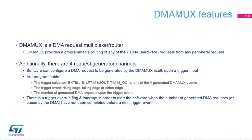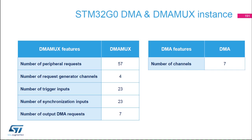The DMA-MUX may also be used as a DMA request generator from programmable events on its input trigger signals. It is used to map peripheral requests onto seven available DMA channels — this mapping is programmable. The DMA-MUX embeds a four-channel request generator that converts triggers into DMA requests. The following triggers are supported: the 16 external interrupts, low-power timers 1 and 2 timeouts, timer 14 output compare, and 4 events generated by the DMA-MUX itself.